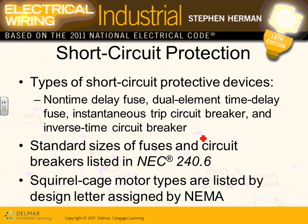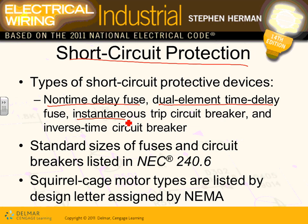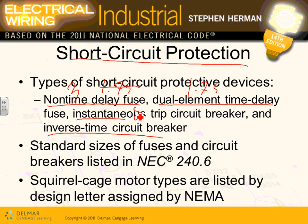For short circuit protection, you have different types: non-time delay fuse with a 1.75 multiplier, dual element time delay fuse at 3x, instantaneous trip at 8x, and inverse time type at 2.5x. The multiplier you apply depends on the type of protective device used.